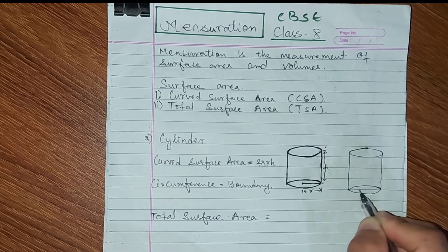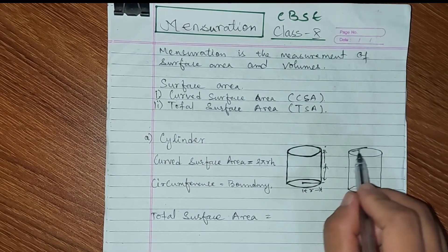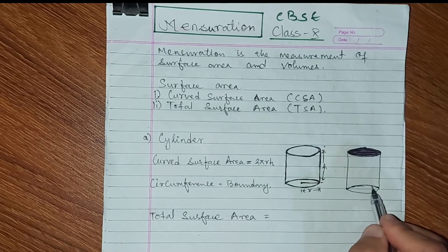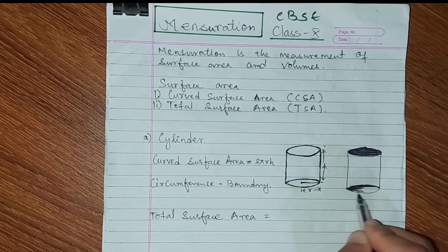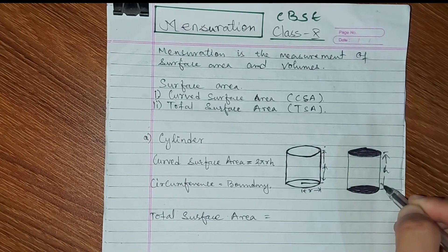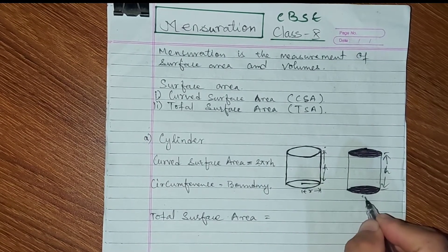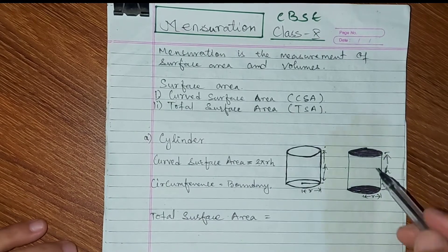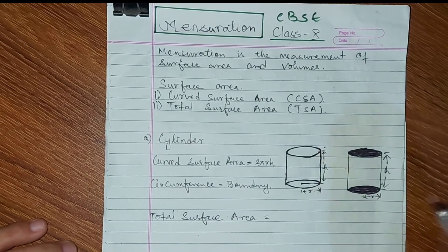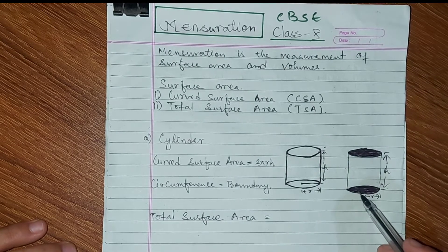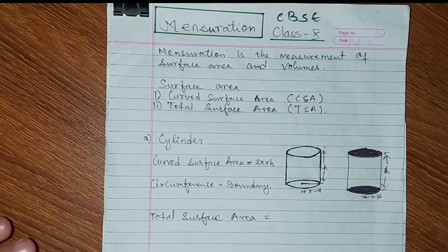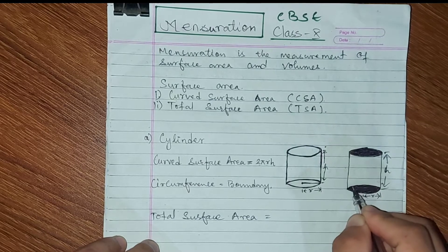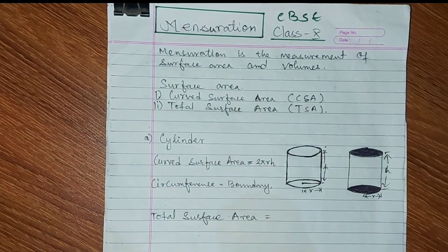The base is hollow — now we have to cover it. The circular base has some area. We know the area of the circular base is πr².